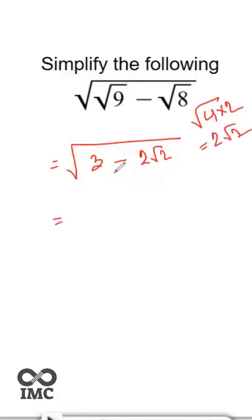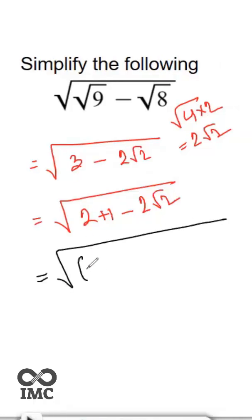So now 3 can be written as 2 plus 1 minus 2 root 2. The 2 represents square root of 2 whole square, plus 1 represents 1 square, minus 2 root 2 into 1.